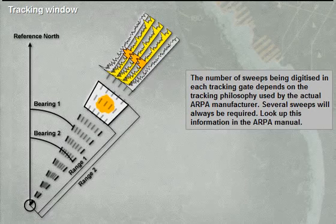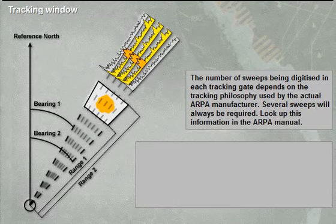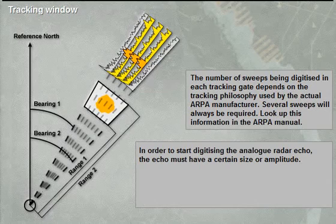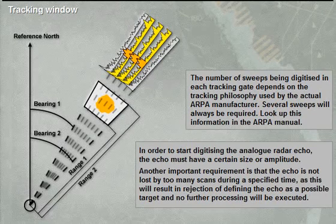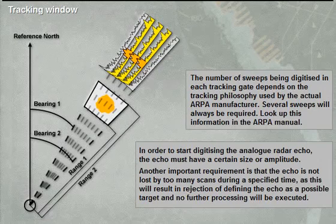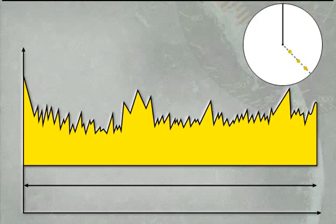Each radar sweep inside the tracking gate is digitised before acquisition is completed. Each tracking gate depends on the tracking philosophy used by the actual ARPA manufacturer — always refer to the information in the ARPA manual. The analog radar echoes or amplitude scans during a specified time for defining the echo as a possible target will be executed. This drawing illustrates the principle of digitising a radar sweep.